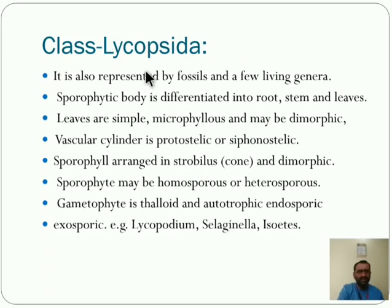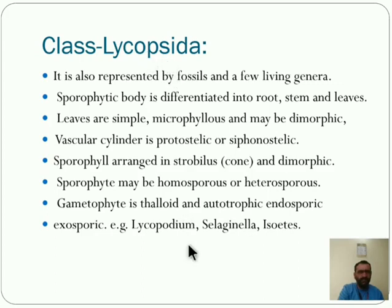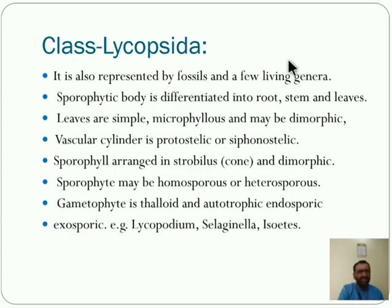The third one is Lycopsida. Examples include Selaginella, Lycopodium, and Isoetes — we know about Selaginella and Lycopodium. These are the examples of the Lycopsida group. First, it is also represented by fossil and a few living genera. In this class, both fossil and living genera are there.